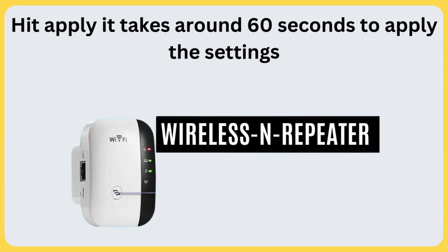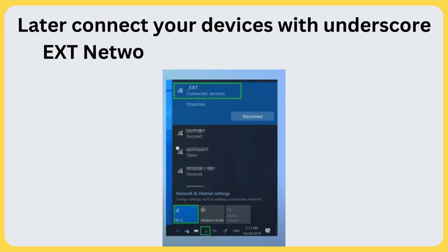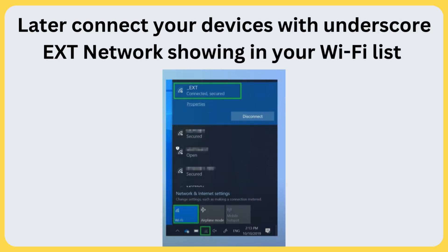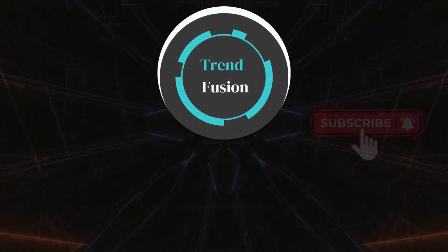Hit Apply. It takes around 60 seconds to apply the settings. Later, connect your devices to the network with '_ext' showing in your Wi-Fi list. Thanks for watching.